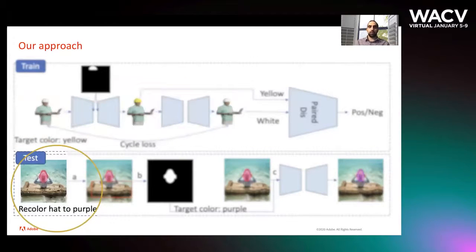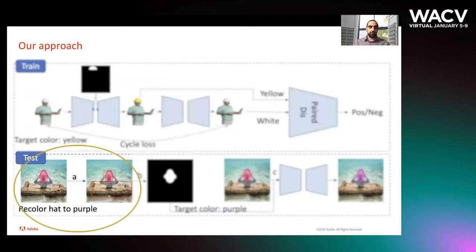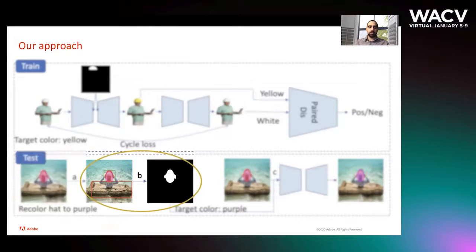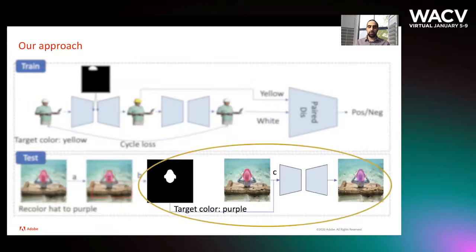During test we are given an image and a command: recolor hat to purple. First we apply object detection and find the object which corresponds to the tag hat. Then we extract mask from that bounding box. Now the original image, the mask, and the target color are passed to the generator, and with a feed forward pass the desired image is generated.